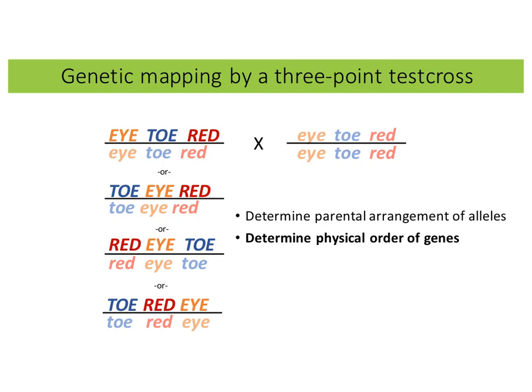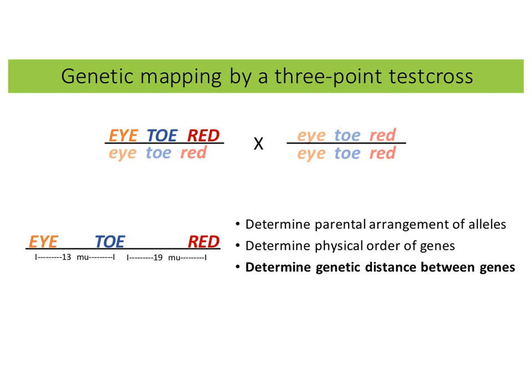The other thing we can determine is the physical order of genes on the chromosomes. We wrote the genes as I, toe, red in that order, but we don't know if that's the case — other possible arrangements include toe-I-red, red-I-toe, or toe-I-red. Additionally, a three-point test cross allows us to determine the physical genetic distance between the genes, for example 13 map units between I and toe, and 19 map units between toe and red.